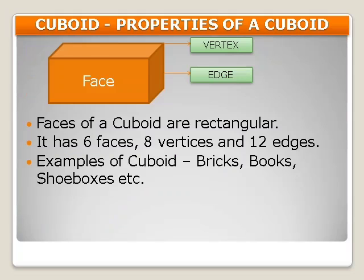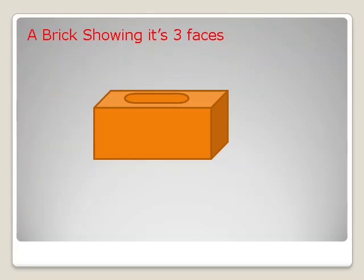The next slide shows you the picture of a cuboid. Properties of a cuboid are: faces of a cuboid are rectangular. It has six faces, eight vertices, and twelve edges. Examples of cuboids are bricks, books, and shoeboxes. We will be focusing more on the bricks.